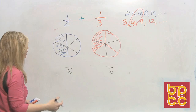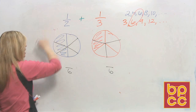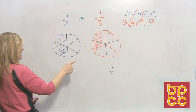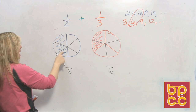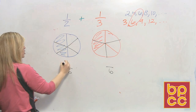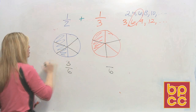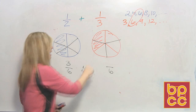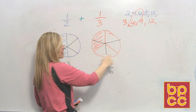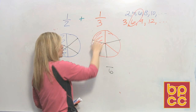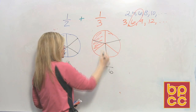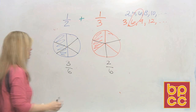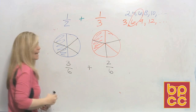But now look — do we just have one piece shaded in? No. If we cut this circle into six slices, now we have three shaded in, so that represents the fraction three-sixths. And if you look here, now that the circle is cut into six equal slices, we have two of these pieces shaded. So now we have two-sixths. But now we can add.